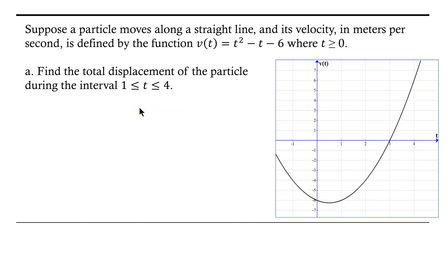Let's take a look at understanding the motion of a particle via the net change theorem. Suppose we have a particle that moves along a straight line and its velocity is measured in meters per second, defined by the function v(t) = t² - t - 6, where t is greater than or equal to 0.